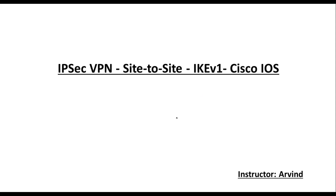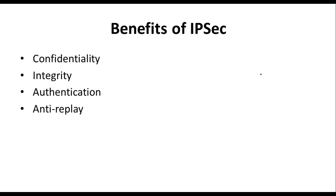Hello everyone, my name is Arvind and today's topic is IPSec VPN site-to-site connectivity. This is a lab session using IKEv1 and Cisco IOS routers. The key benefits of IPSec are: confidentiality (encryption/decryption), integrity (hashing), authentication (authorizing communication parties), and anti-replay protection, which tracks each packet with a sequence number and discards duplicates.